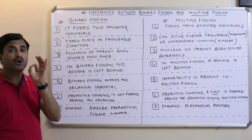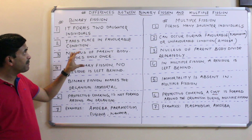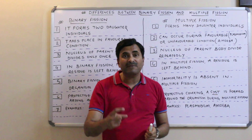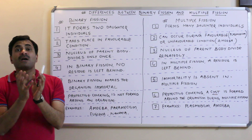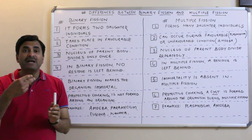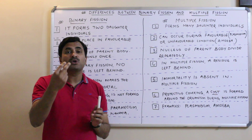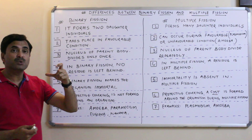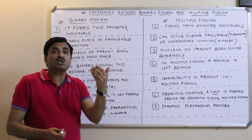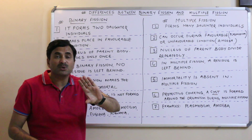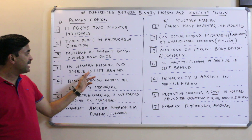The most important point of binary fission is that no residue is left behind. In binary fission, the organism itself acts as a complete reproductive unit. It divides into two halves, and each half starts behaving as a new individual. The parent organism starts living as two daughter individuals — there is no dead body or residue of the parent body left behind after binary fission.